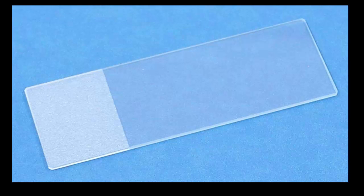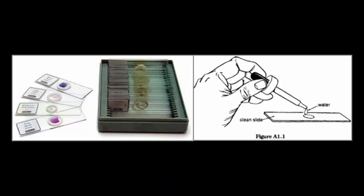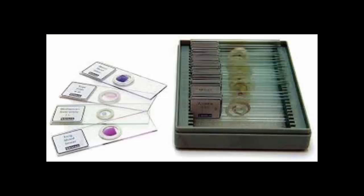Microscope slides are small, thin pieces of glass used to view specimens. There are two main types of slides that we will be using. Prepared slides: purchased specimens that are labeled and sometimes stained.